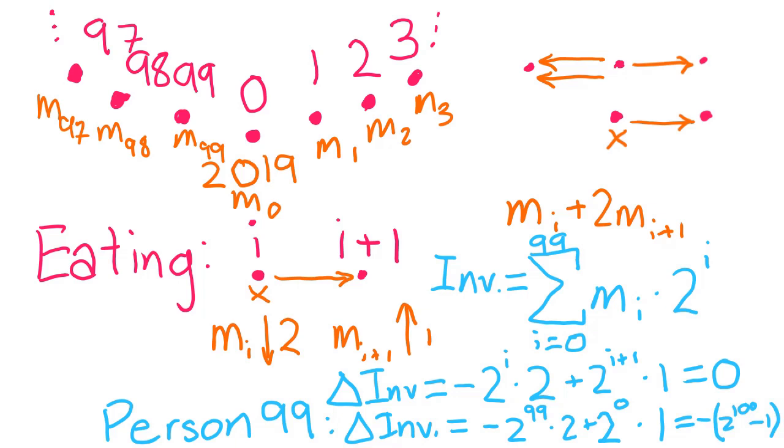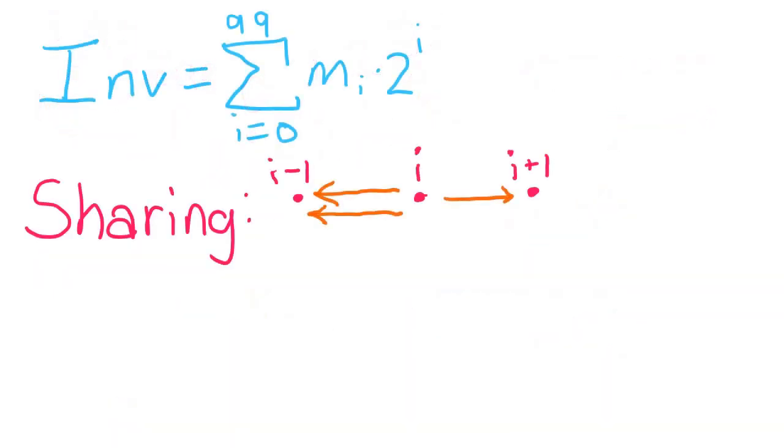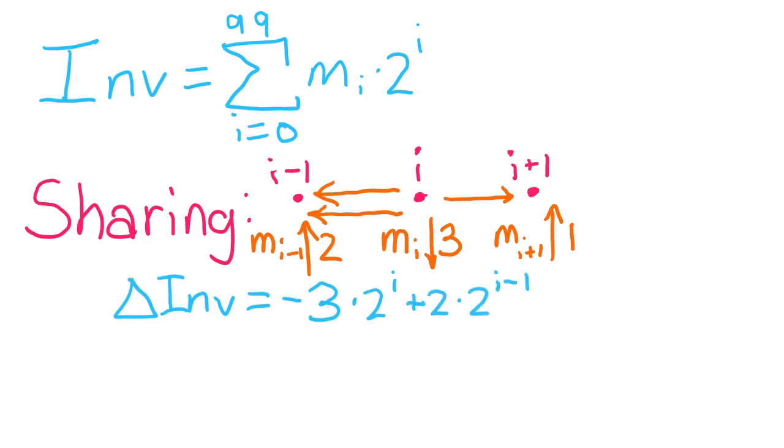The sharing process is such that if p_i shares, then m_i decreases by 3, m_{i-1} increases by 2, and m_{i+1} increases by 1. Then, we easily get that -3 times 2^i + 2 times 2^{i-1} + 1 times 2^{i+1} is equal to 0. So, the invariant works perfectly for sharing as well! Except, of course, near the edges.